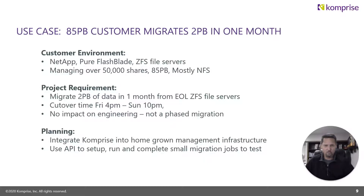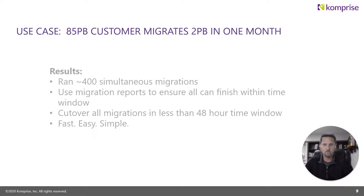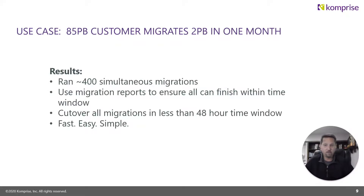We integrated Comprise into their homegrown management infrastructure using open APIs and were able to set up, run, and complete small migration jobs to test, then perform final cutovers during the migration window on Friday from 4 p.m. to Sunday at 10 p.m. The results: we were able to run 400 simultaneous data migrations. They utilized our migration reporting to ensure all migrations would finish within the allotted window — especially within the 48-hour cutover window. The customer's response was that this was very fast, easy, and simple.